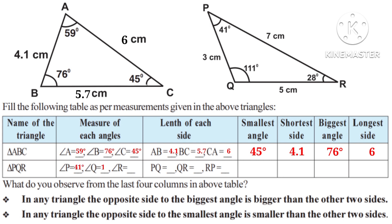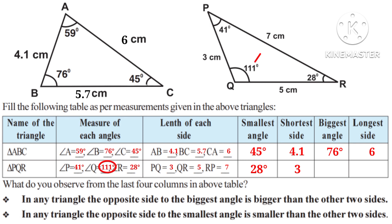In triangle PQR, angle Q is 111 degrees, angle R is 28 degrees. The length of PQ is equal to 3 cm, QR is equal to 5 cm, and PR is equal to 7 cm. Observe that the smallest angle is angle R at 28 degrees, and exactly opposite to that the shortest side is PQ at 3 cm. The biggest angle is angle Q at 111 degrees, and exactly opposite to that the longest side is PR at 7 cm.